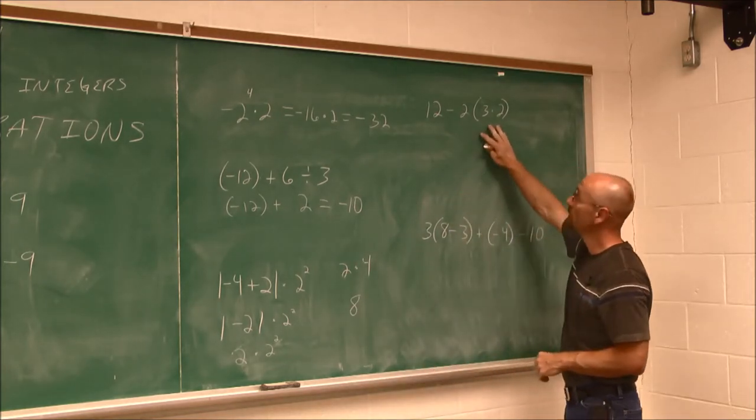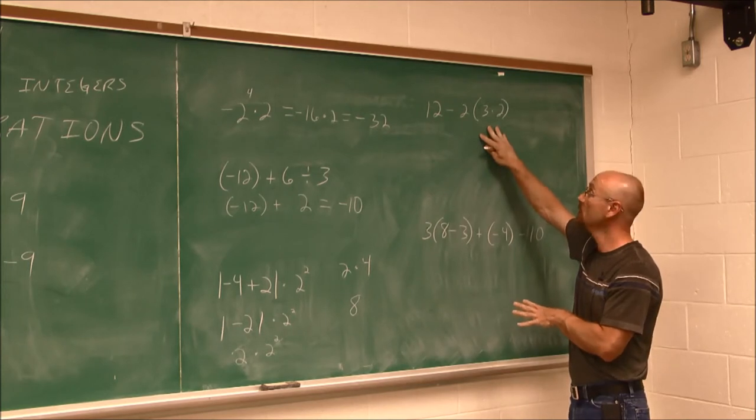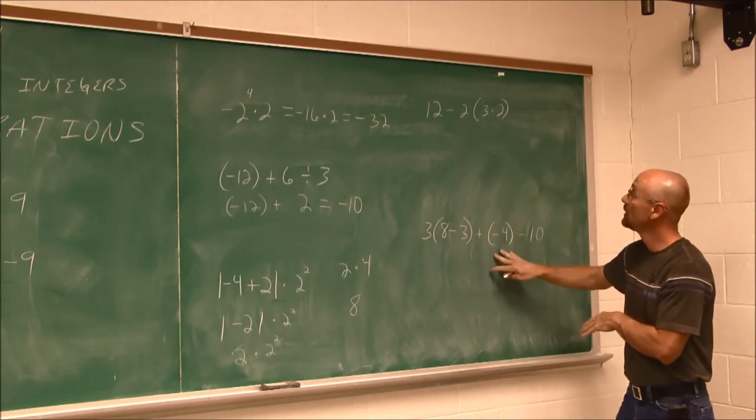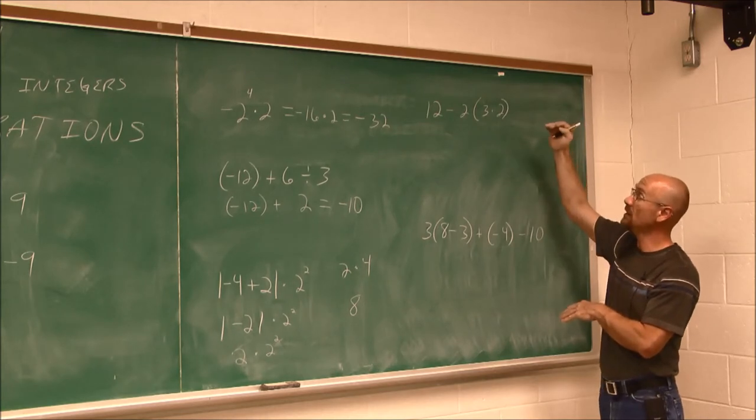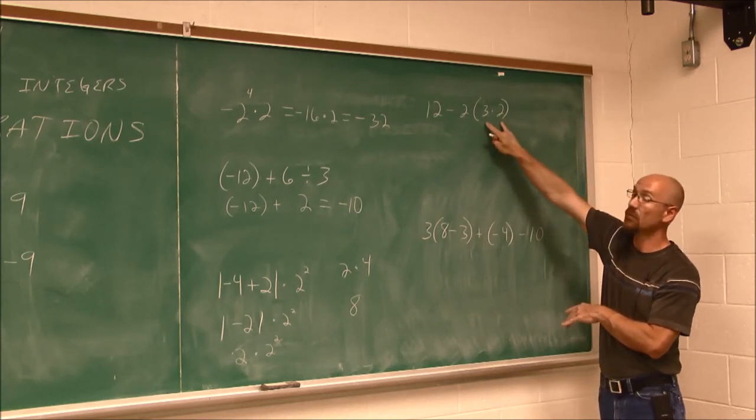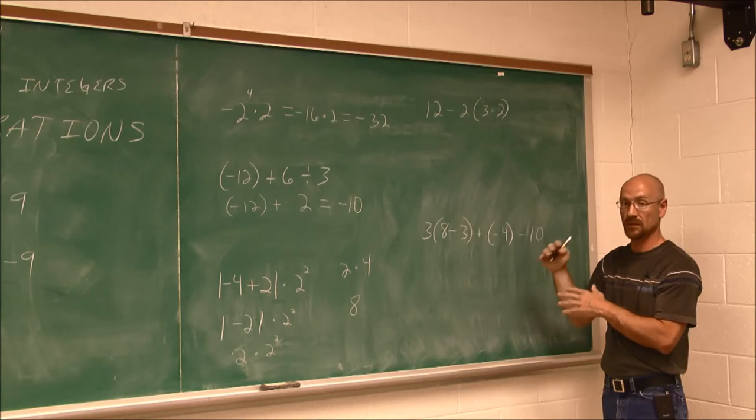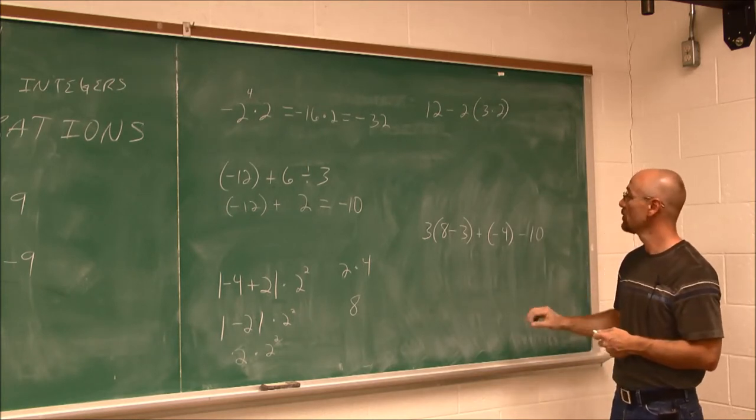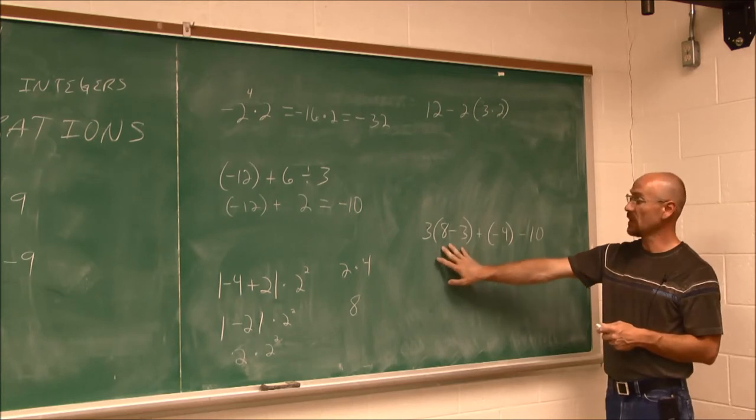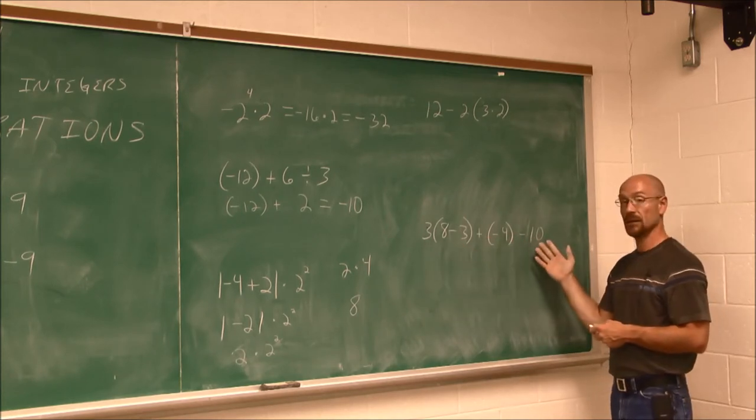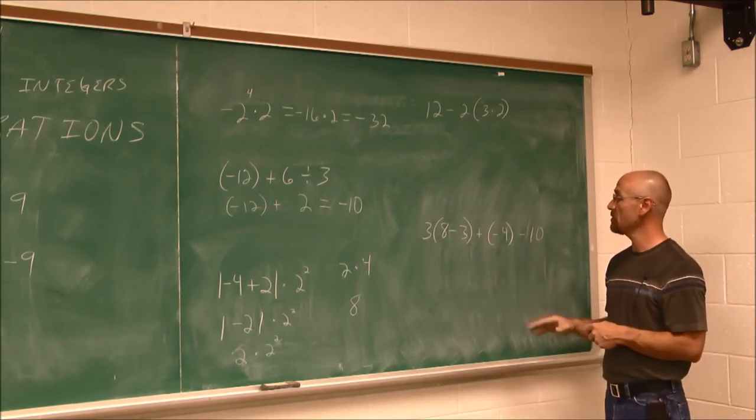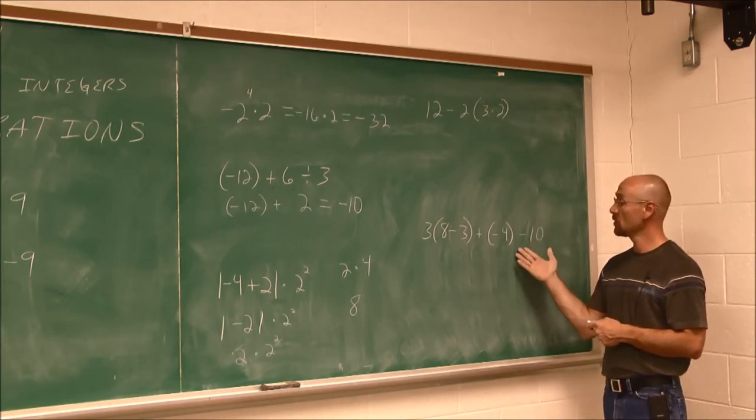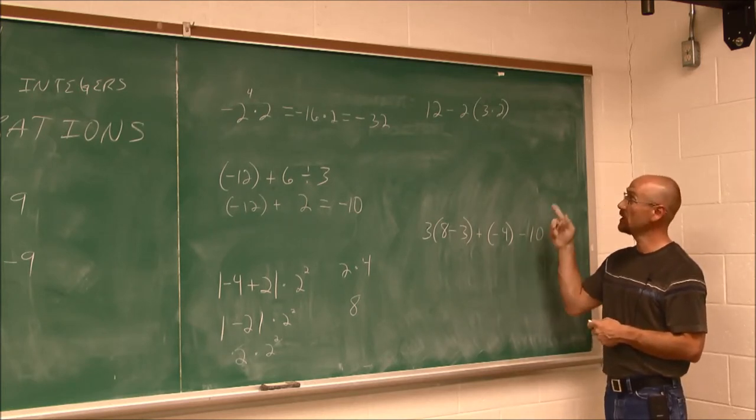All right, I want you to take this time to pause the video and attempt both of these on your own. So we have 12 minus 2 times the quantity of 3 times 2. Parentheses, exponents, multiplication, division, addition, subtraction in a left to right order. Here, same thing. We have grouping symbols. Luckily, no exponents. That saves us a step. And then we have multiplication and addition and subtraction. So go ahead, follow order of operations, and attempt both of these.